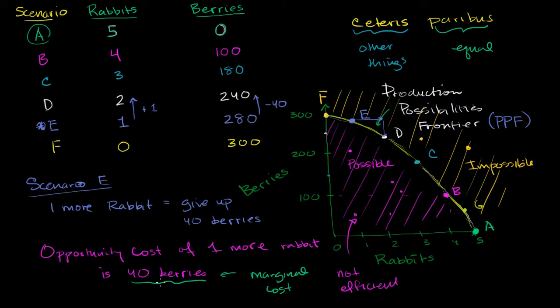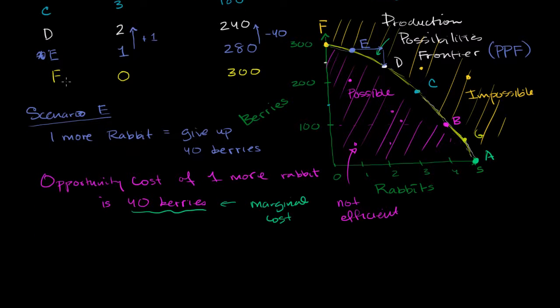In the context of this video, our costs are in terms of the thing that I'm giving up — the opportunity that I'm giving up. In other scenarios, you'll see sometimes the marginal cost given in actual monetary units, like dollars or whatever else — what was the cost of producing that extra unit, that extra widget right over there? But let's make sure we understand opportunity cost. So that's, when we were sitting in Scenario E, the opportunity cost of one more rabbit.